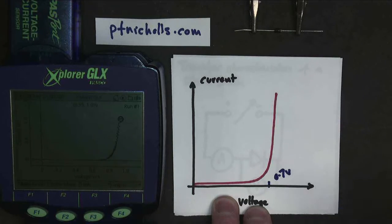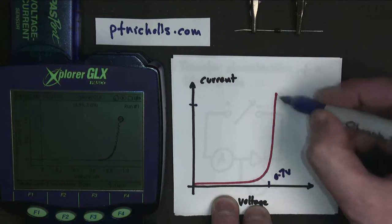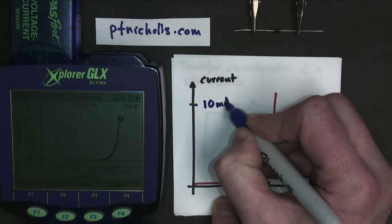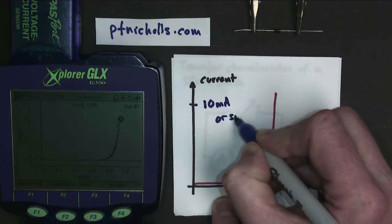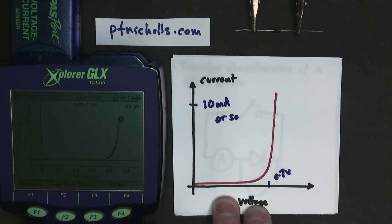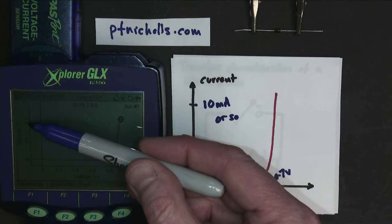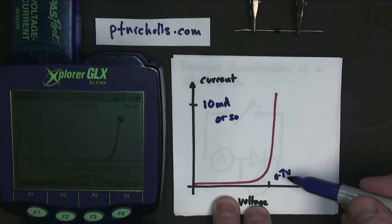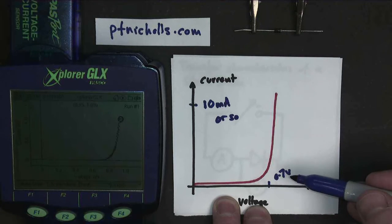Well, this graph that we often draw like this with 0.7 volts assumes a current of only 10 milliamps or so, maybe 100 milliamps. On my graph, I've gone right up to 1 amp. If you make a large current flow through a diode, then the voltage does increase above 0.7 volts. It goes to 0.8, 0.9 volts.